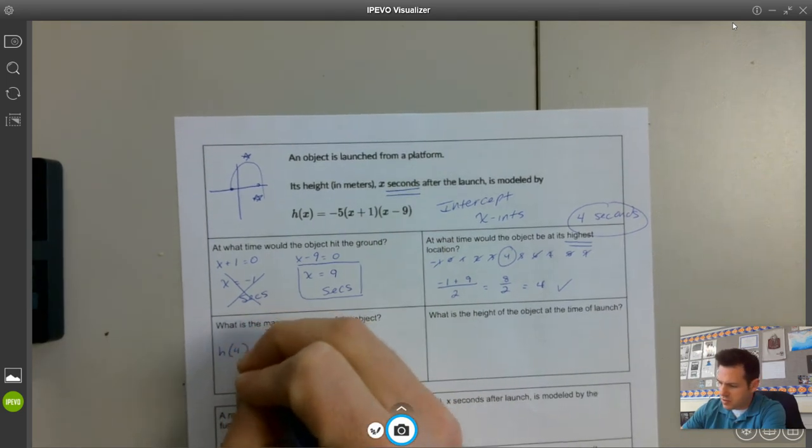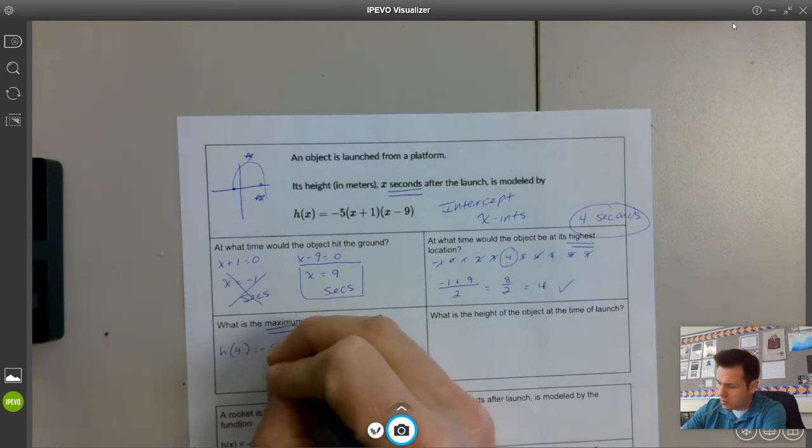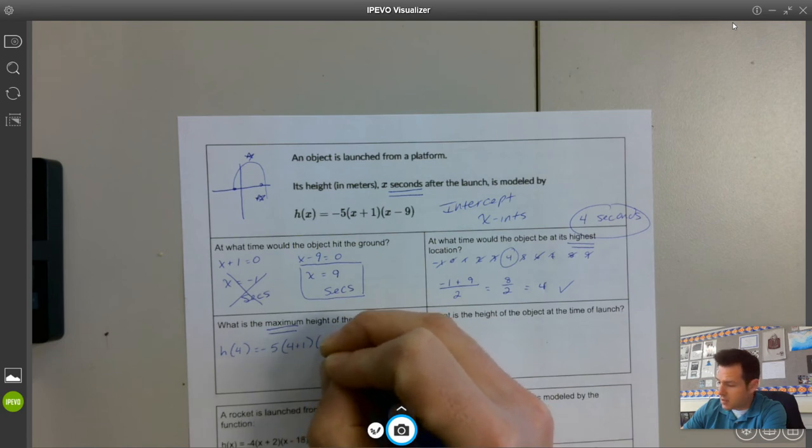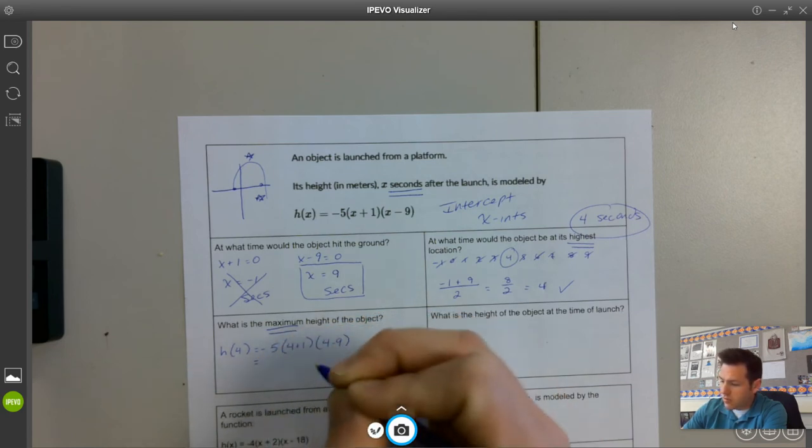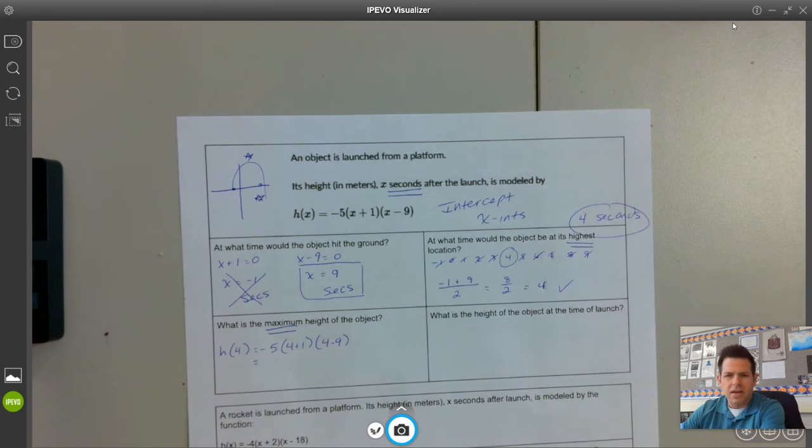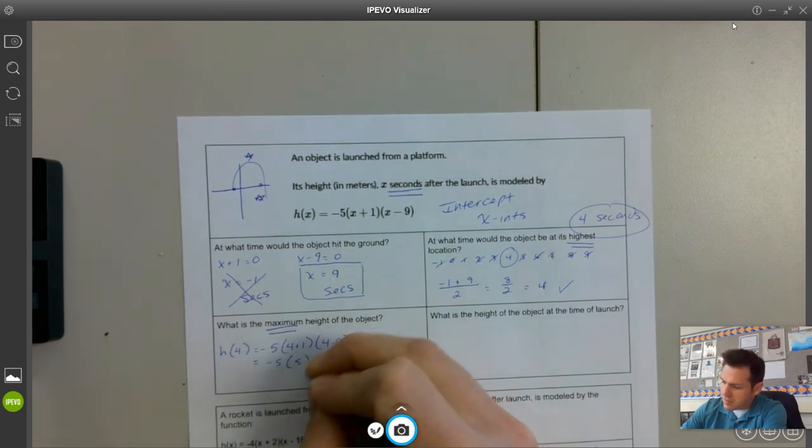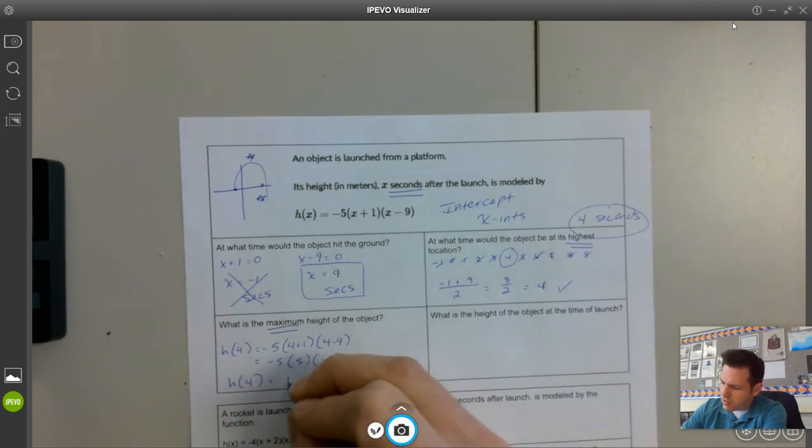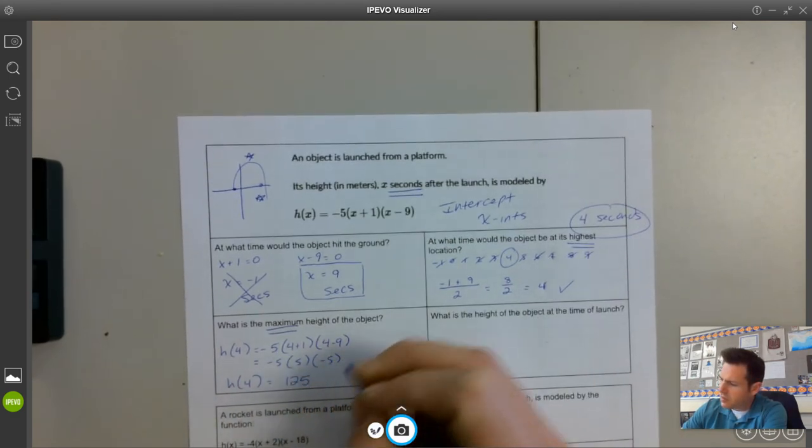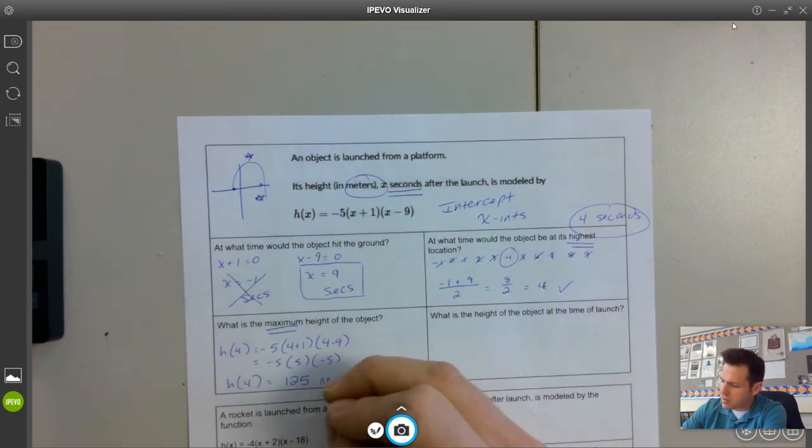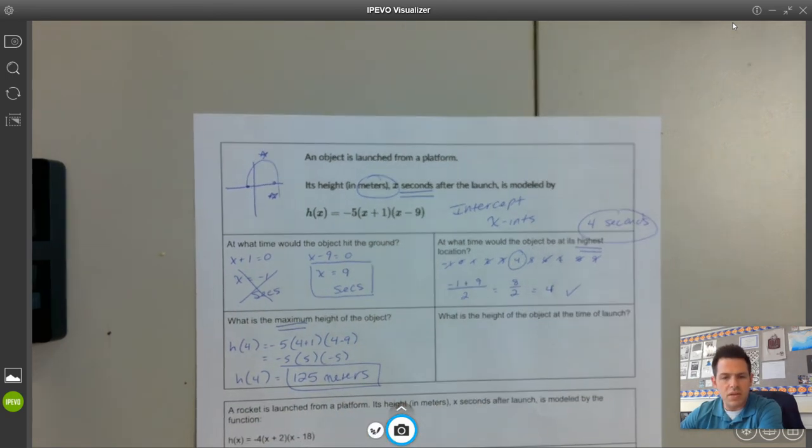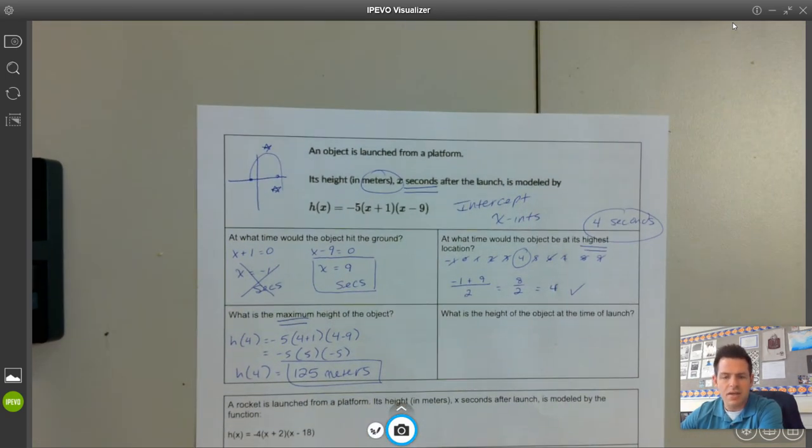So I'm going to plug it into this function. I've got the number four. You're watching this on video, so if you need to slow it down to calculate here, you want to check the calculator before I show you the answer. We got negative five times five times negative five. And I believe that would be 125. And we're in meters here. So we'll go with meters. 125 meters would be the highest location of this object, and we know that that's the case at four seconds.